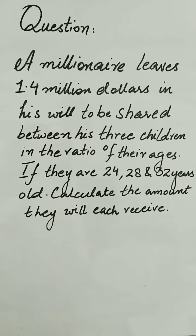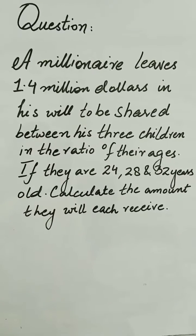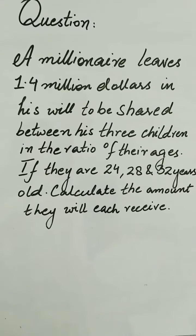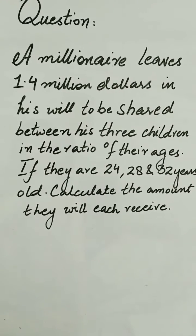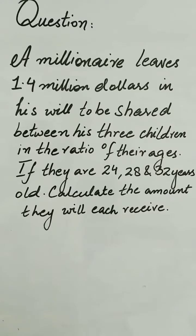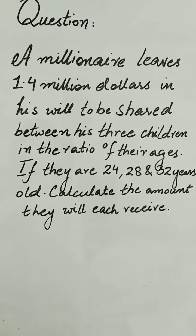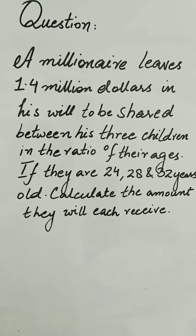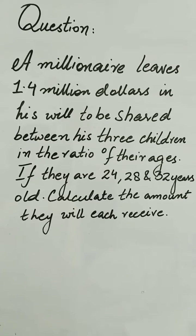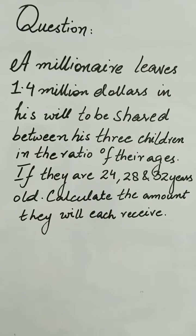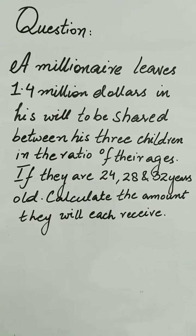A millionaire leaves 1.4 million dollars in his will to be shared between his three children in the ratio of their ages. If they are 24, 28 and 32 years old, we will calculate the amount they will each receive. First of all, we are going to write their ages in terms of ratio.